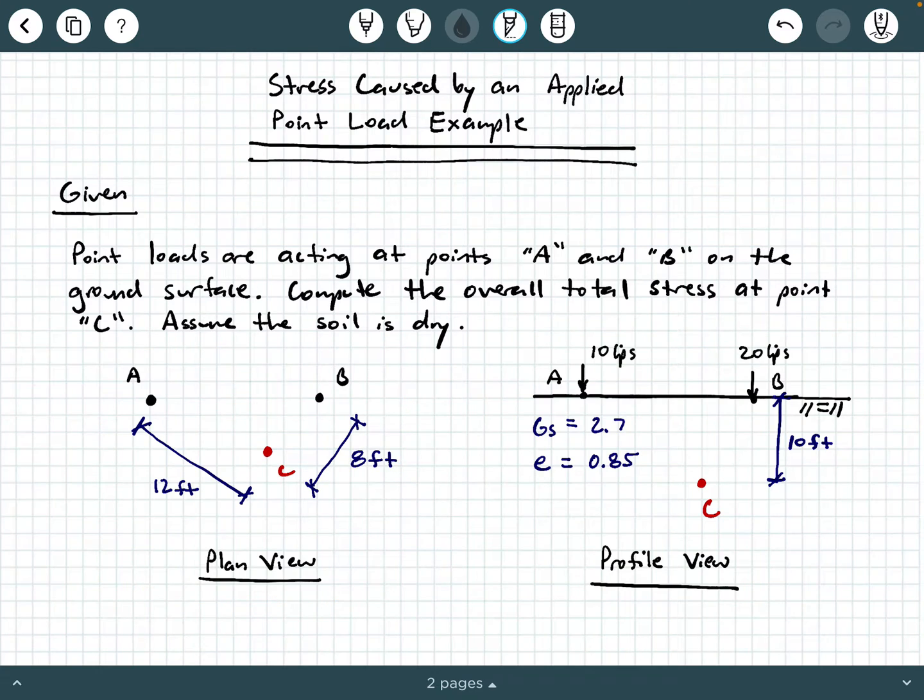That means you're looking down on the ground surface like a bird's eye view. And where the loads are applied are at these points A and B. And then point C is the point beneath the ground surface that we're interested in computing the stress at. So we have this diagonal distance from point A to point C of 12 feet, and we have another diagonal distance from point B to point C of 8 feet. Now where we have to be careful is that this 12 feet and 8 feet are actually on the ground surface. They're not going into the ground. They're on the ground surface.